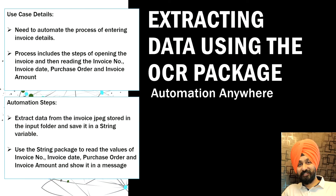These are the steps for the automation. First, I will extract the data from the invoice, which is going to be a JPEG file, and save it in a string variable. After saving it in a string variable, I will be using the string package to extract the text in a way that meets the requirement of extracting the required parameters, and then show the parameter values in the message box. That's the objective of this video.